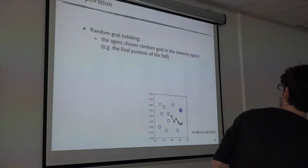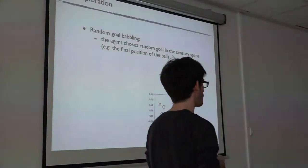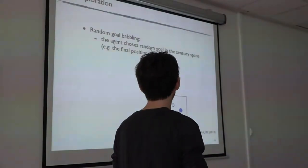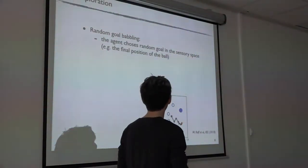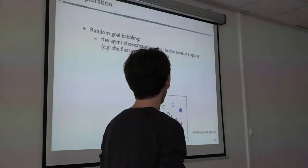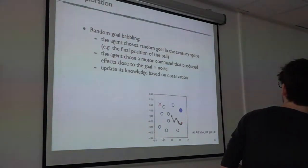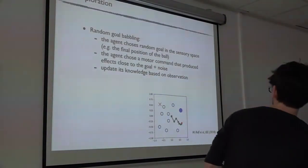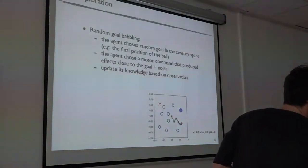A more efficient strategy is random goal babbling, as introduced by Sebastian and Cedric. The key idea is not to consider the motor space but rather the outcome space — in this case, the final position of the ball. We sample a random goal, look for the closest position we have achieved, recover the motor command that produced that outcome, and apply the same motor command with some noise. Then we observe the outcome and update our knowledge based on the observation.